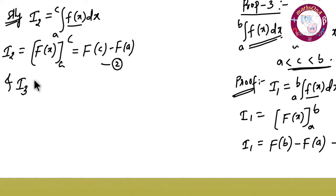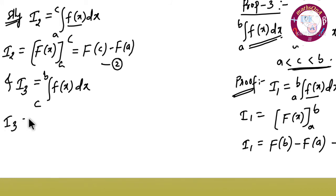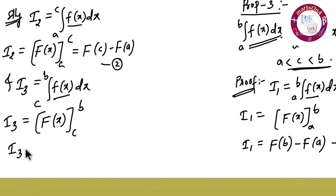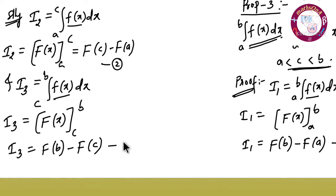The third integral i3 equals integration of c to b f of x dx. Integrating, small f of x becomes capital F of x with limits c to b. So i3 equals F of b minus F of c. This is equation number three. Now add equation two and equation three.